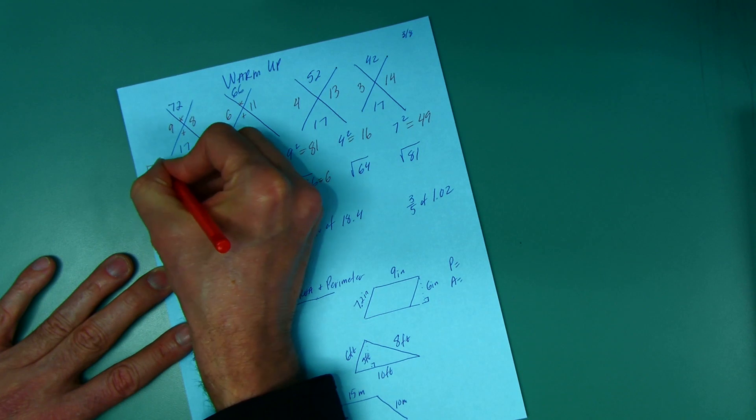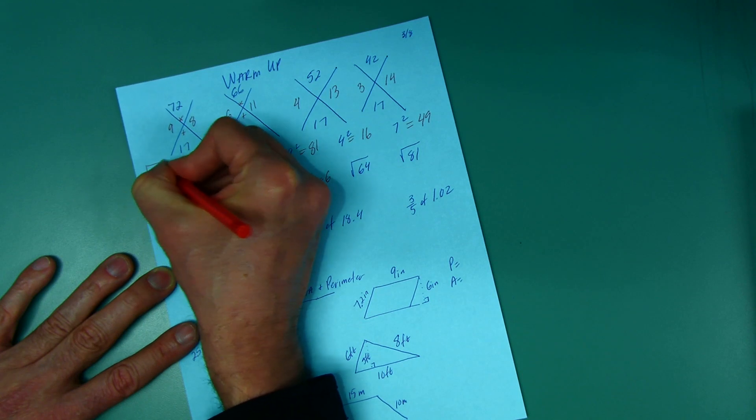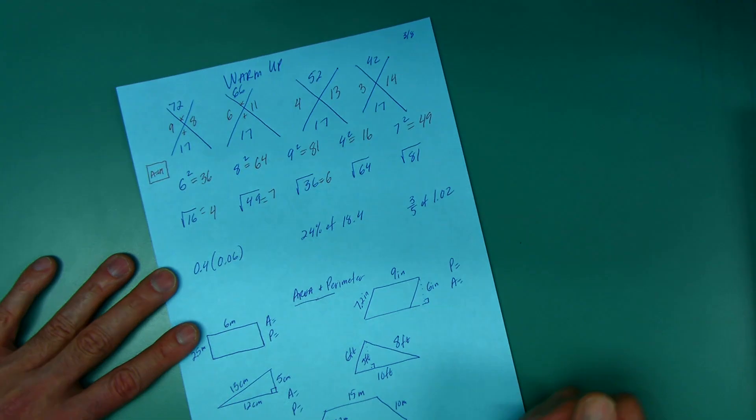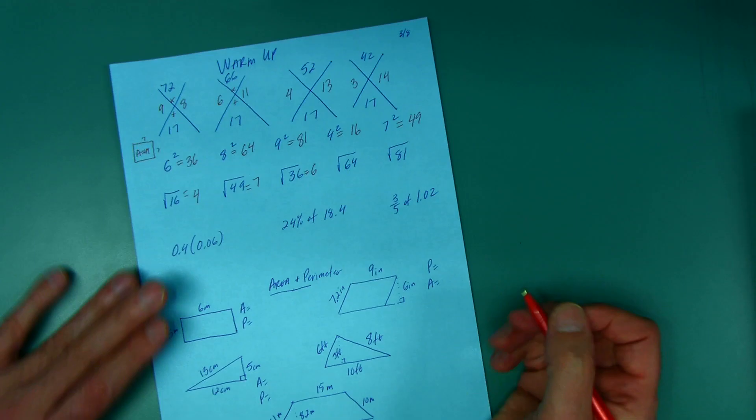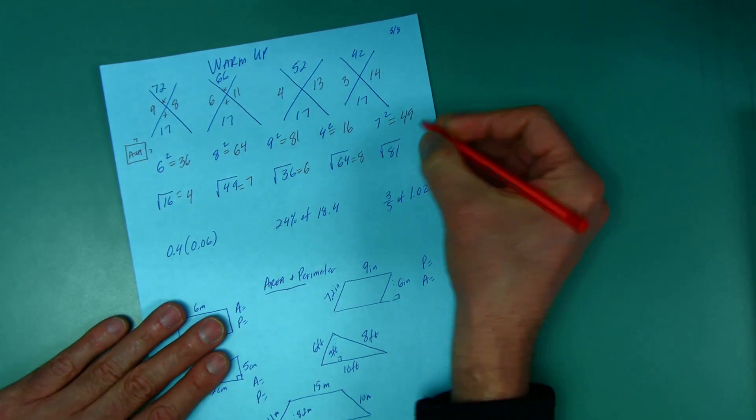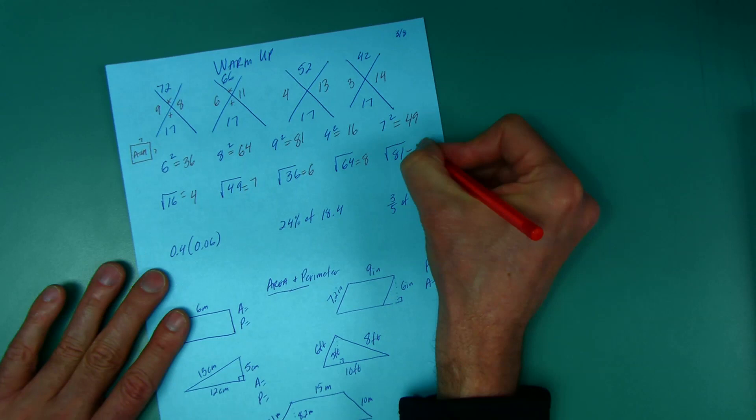And again, why does that work? If I had a square and I told you the area of this square is 49, how big is each side? Well, it must be 7. The square root of 64 is 8 and what's the square root of 81? It is 9.